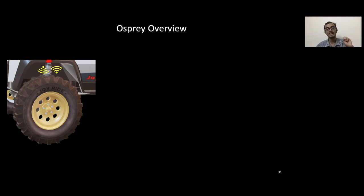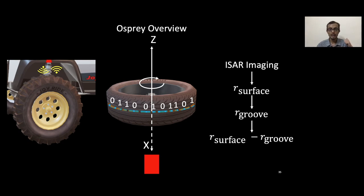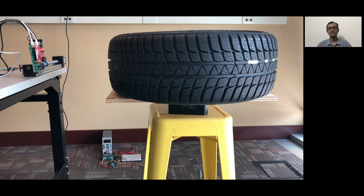So in an overview, Osprey essentially embeds millimeter wave radar in the tire well. The radar blasts signals at the tire and observes reflections. In the tire, Osprey lays out aluminum strips which are pulse width modulated and emulating a spatial code. On the software side, we do inverse synthetic aperture imaging and we obtain the surface and the groove radius and simply subtract the two.